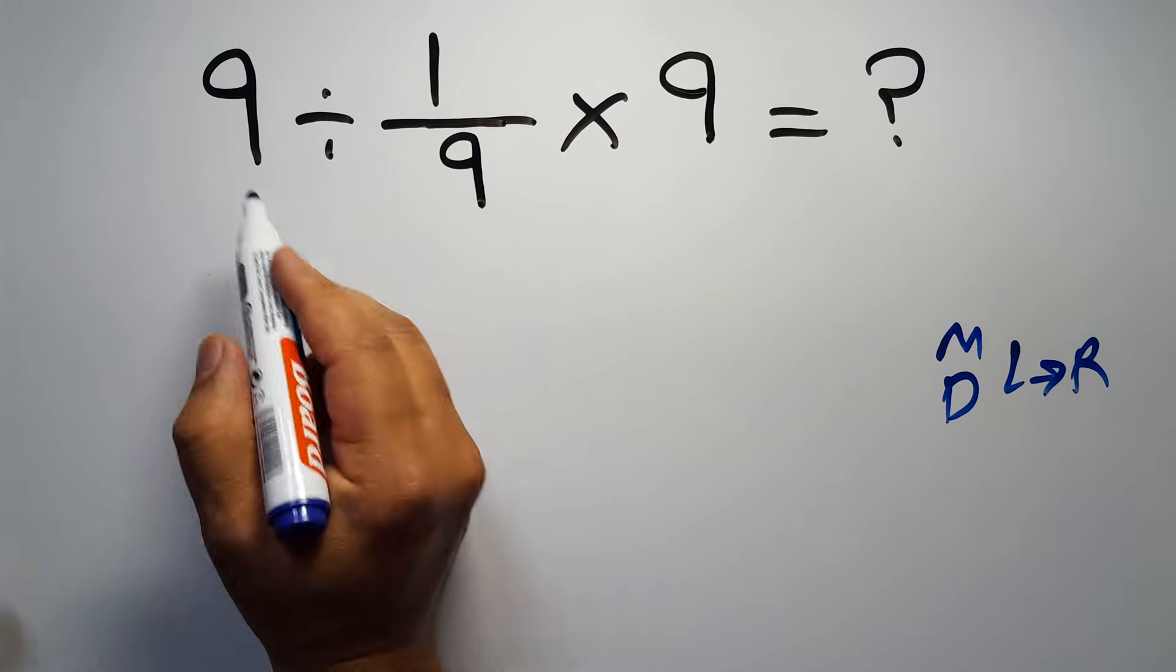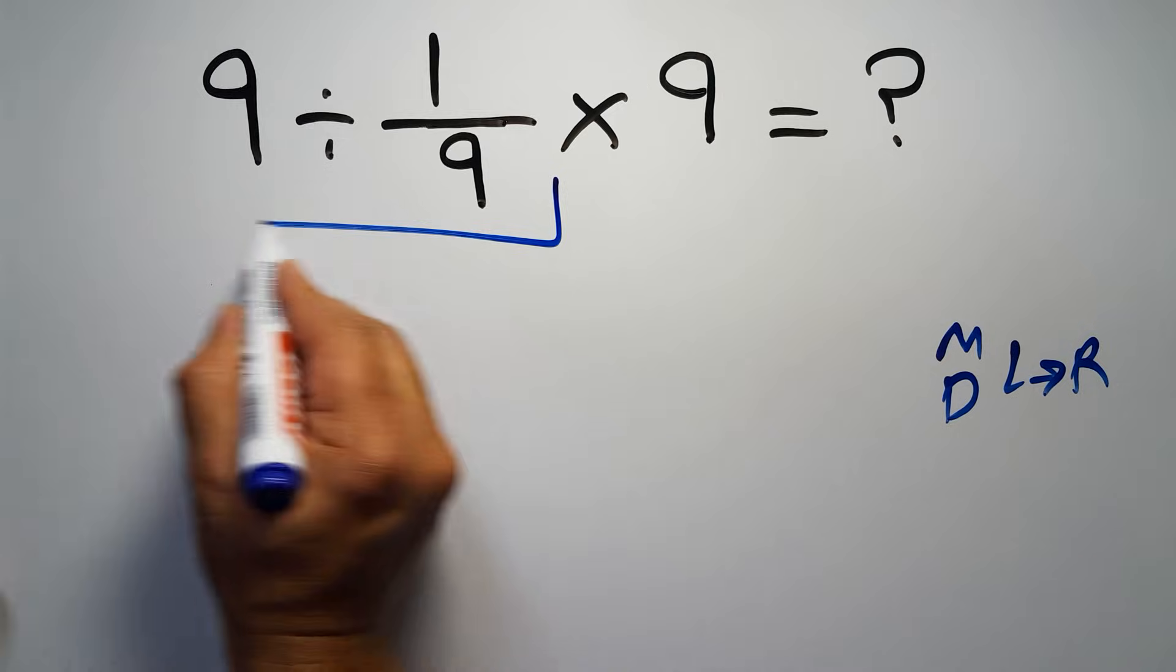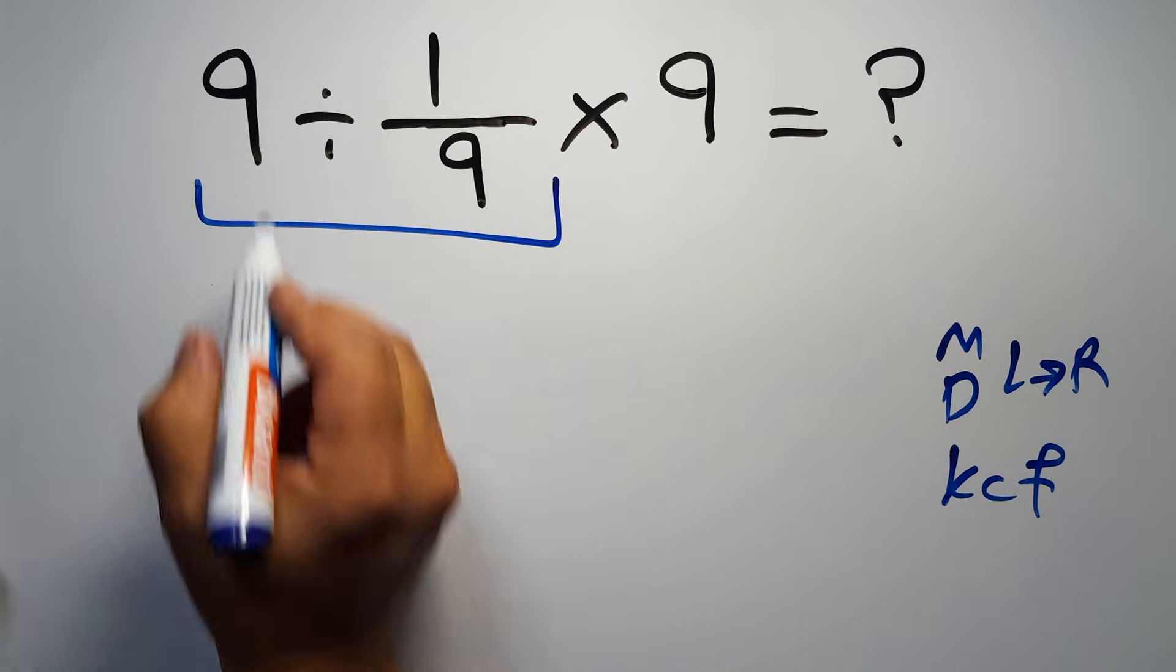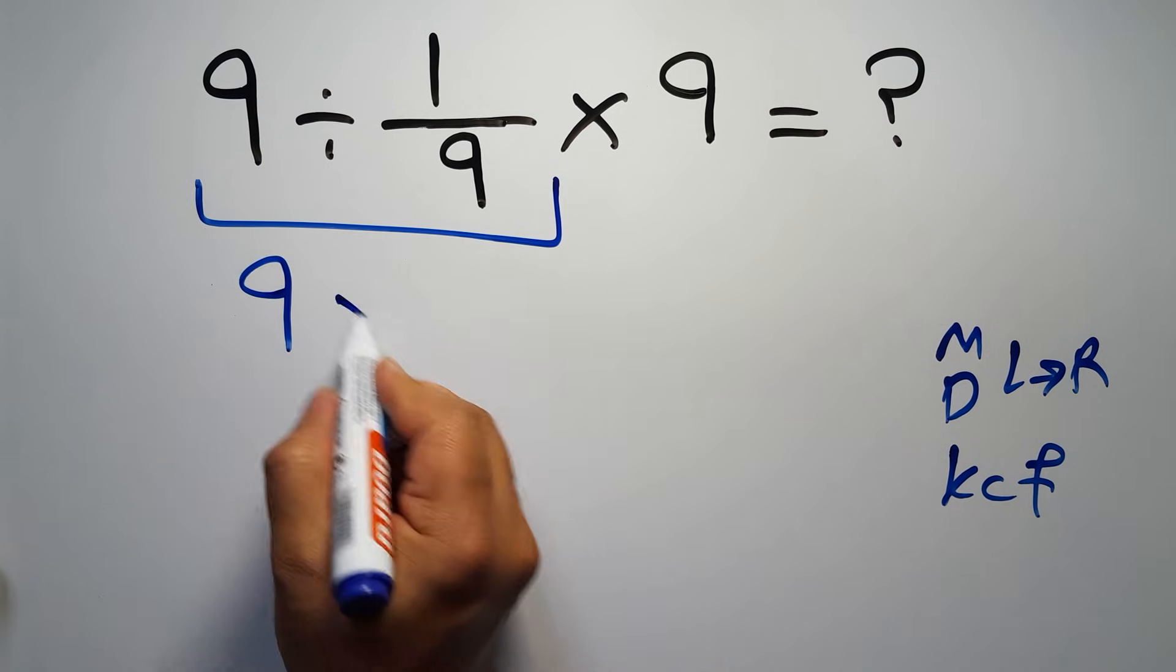So first, this division: 9 divided by 1 over 9. According to the KCF rule, K stands for keep, C stands for change, and F stands for flip. We can write: keep the first fraction, change division to multiplication, and flip the second fraction.